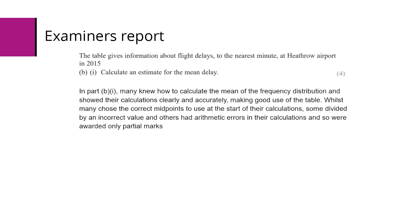The examiner's report says that this question was often done well, with many students knowing what to do and showing it clearly and accurately with good use of the table. Many used the correct midpoints, but some divided by an incorrect value, often students will divide by five because there's five rows in the table, and others just made arithmetical errors.